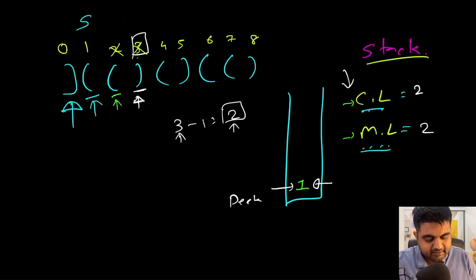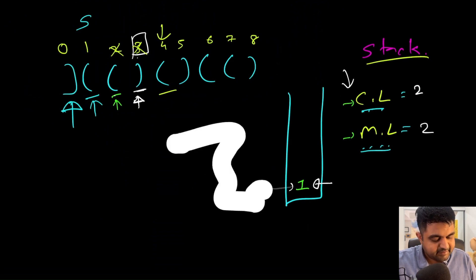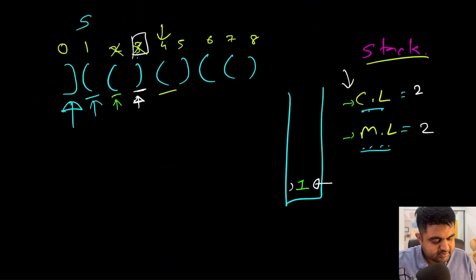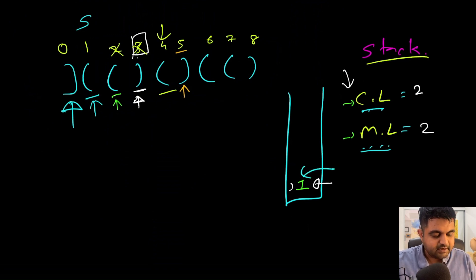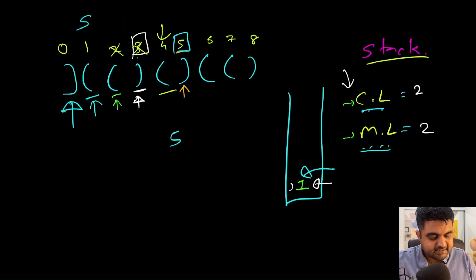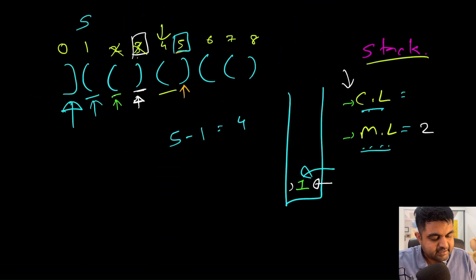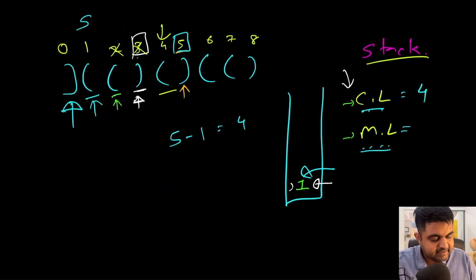Now at position four, we identify another opening bracket, so we push index four into the stack. Then at position five, we identify a closing bracket, so we pop index four out. The element left in the stack is at index one, and current index is five. So the current substring length is five minus one, which equals four. We update the current length to four and also update the maximum length to four.